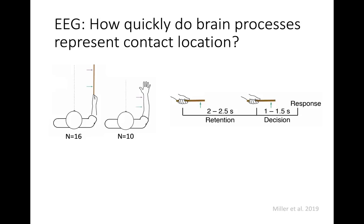Subjects would hold the tool, we would hit one of two locations, then there was a two to two-and-a-half second retention period. Then we would hit the rod again, either at the same or a different location, and they had to judge whether it was the same location — reporting close-to-hand by raising their heel, or far-from-hand by raising their toe. This forced a spatial judgment rather than a simple same/different response, and we never gave them feedback. Accuracy was almost always above 90% for both the tool and the arm.